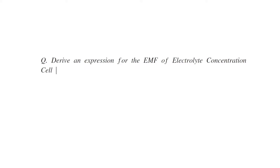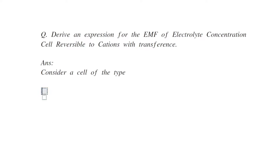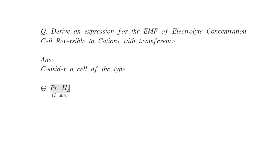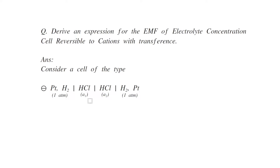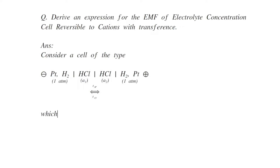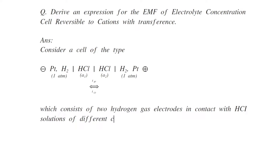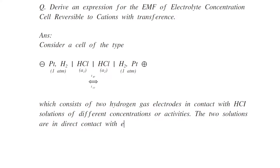Derive an expression for the EMF of electrolyte concentration cell reversible to cation with transference. Consider a cell of the type: platinum in contact with hydrogen gas at 1 atmospheric pressure, in contact with HCl of activity A1, in contact with HCl of activity A2 with a porous partition, and then hydrogen gas at 1 atmosphere and platinum. This type of cell consists of two hydrogen gas electrodes in contact with HCl solutions of different concentrations or activities, and the two solutions are in direct contact through a porous partition.